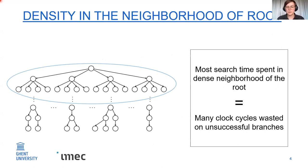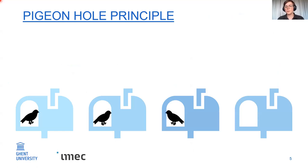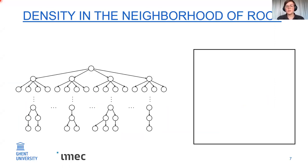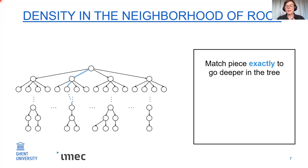The simplest search scheme to explain is the pigeonhole principle. Imagine you have four post boxes and three pigeons arrive — there will always be at least one empty box. We can extrapolate this to pattern matching: if we partition our pattern into four parts and distribute three errors, there will always be at least one part that is error-free. Error-free means exact matching, which is much cheaper than approximate matching. So we start with an exact match to go deeper into the tree, and only in the sparse area do we begin approximate searching.